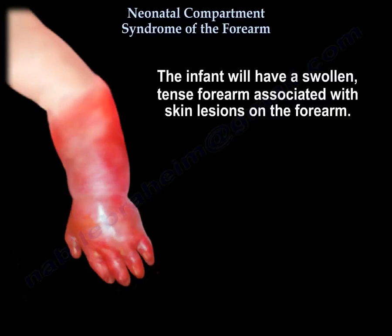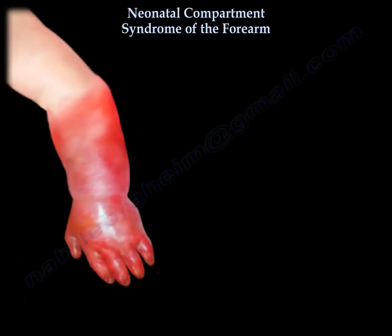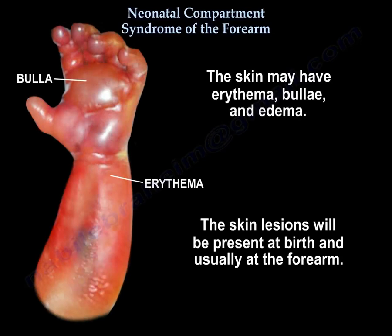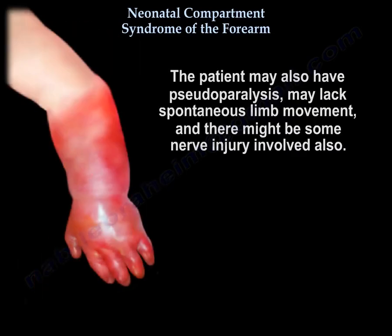The infant will have a swollen, tense forearm associated with skin lesions on the forearm. The skin may have erythema, bullae, and edema. The skin lesions will be present at birth and usually at the forearm. The patient may also have pseudoparalysis, may lack spontaneous limb movement, and there might be some nerves involved also.